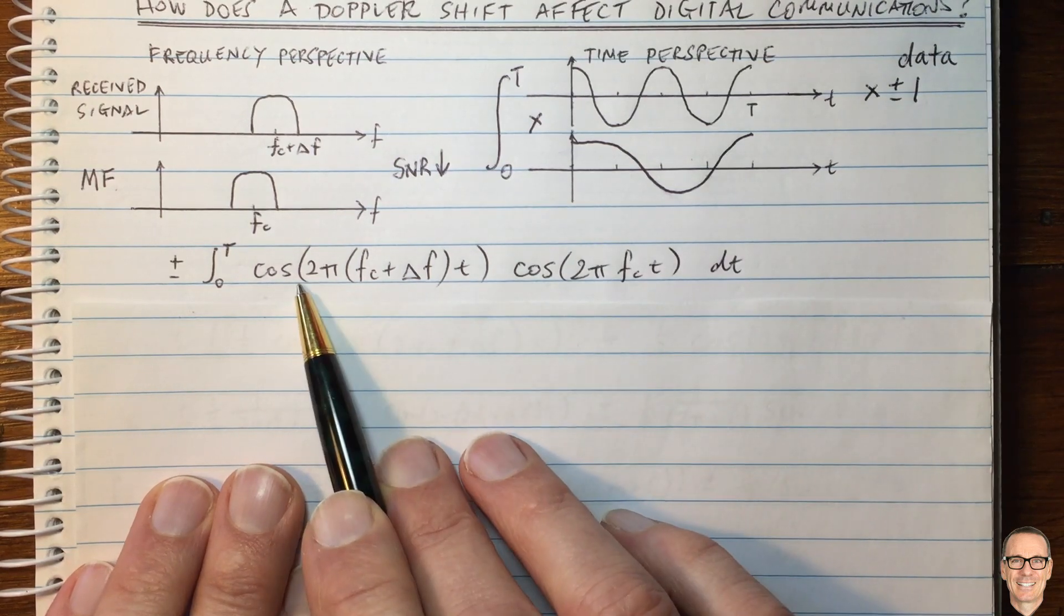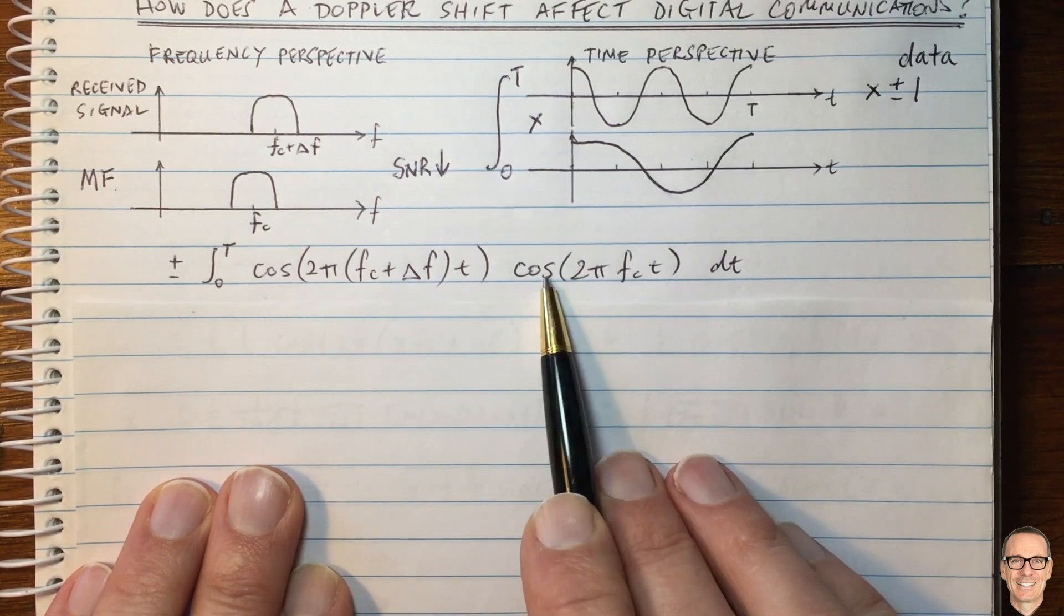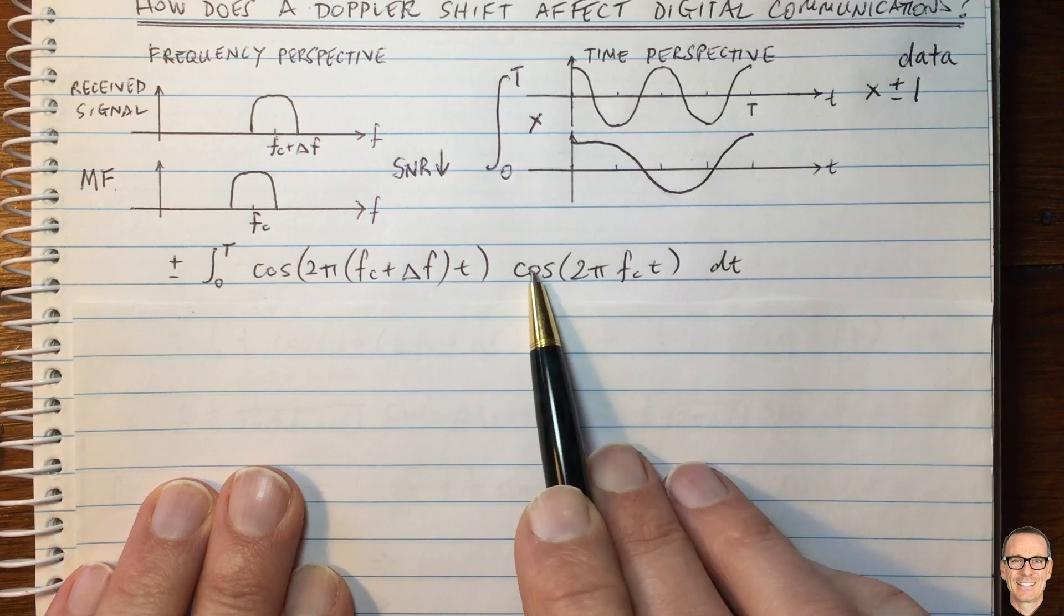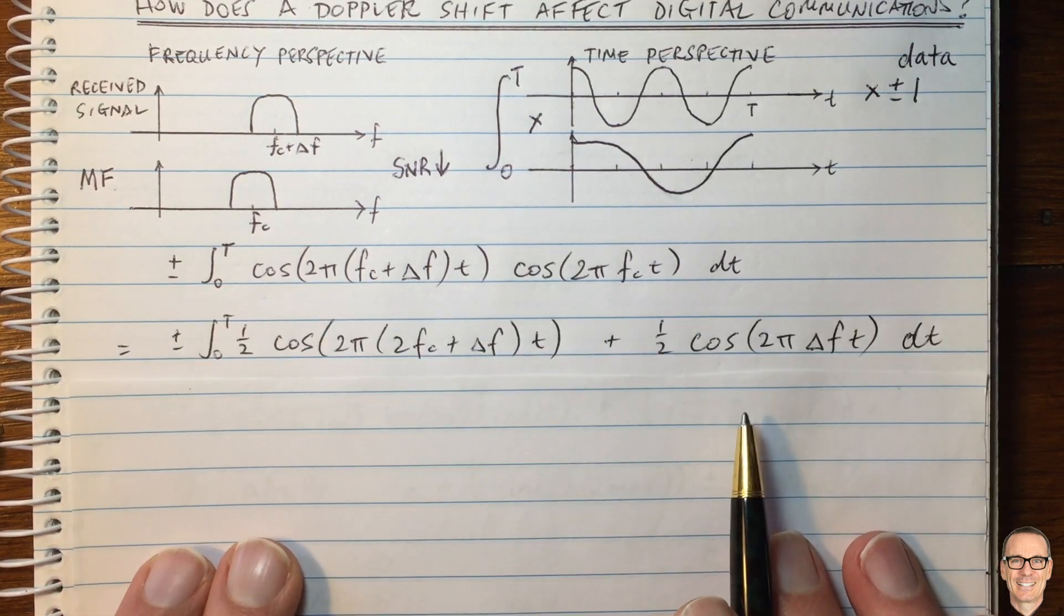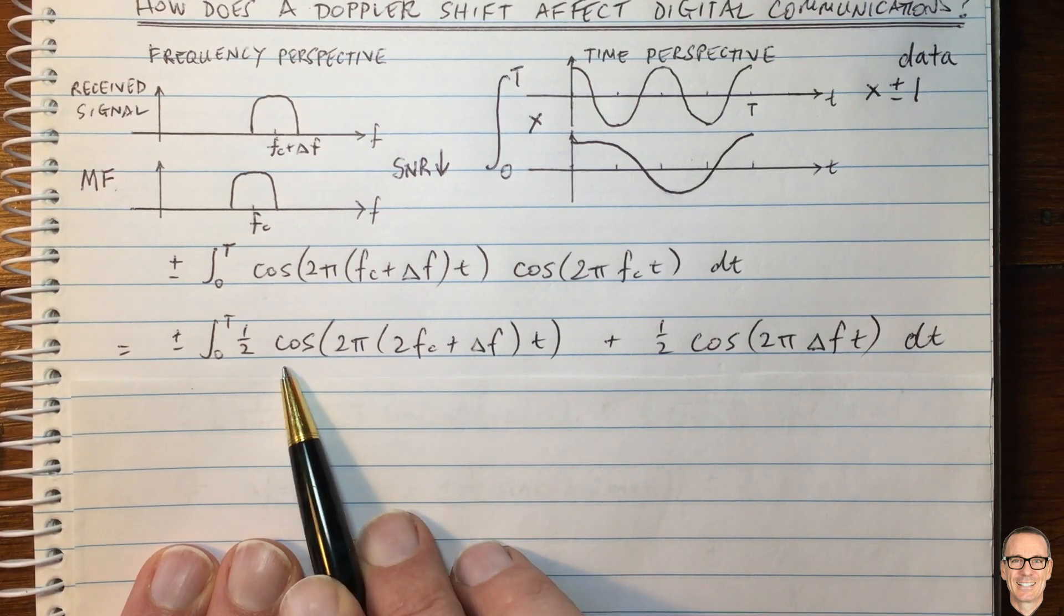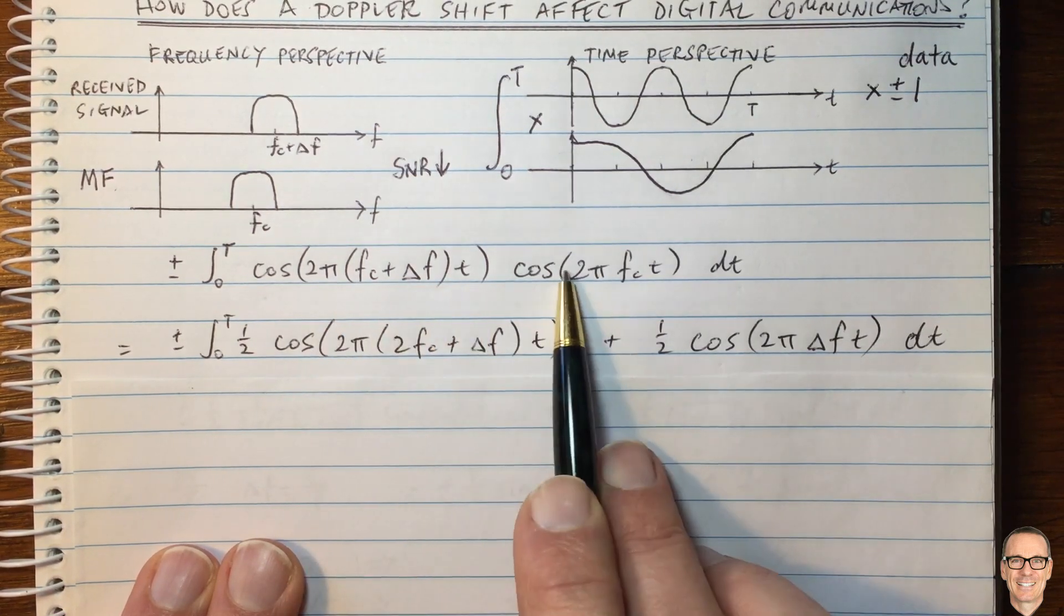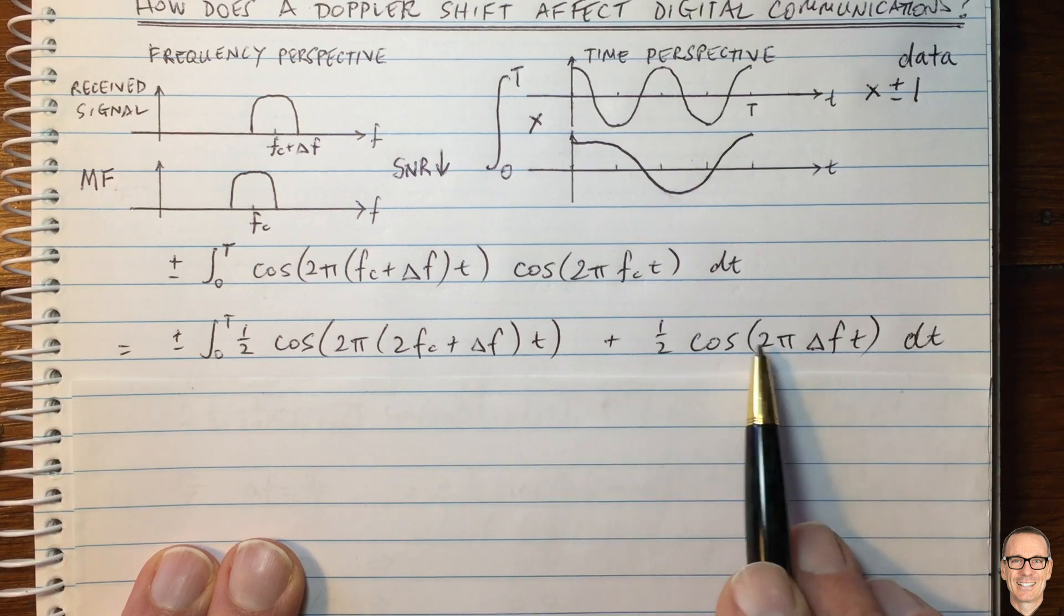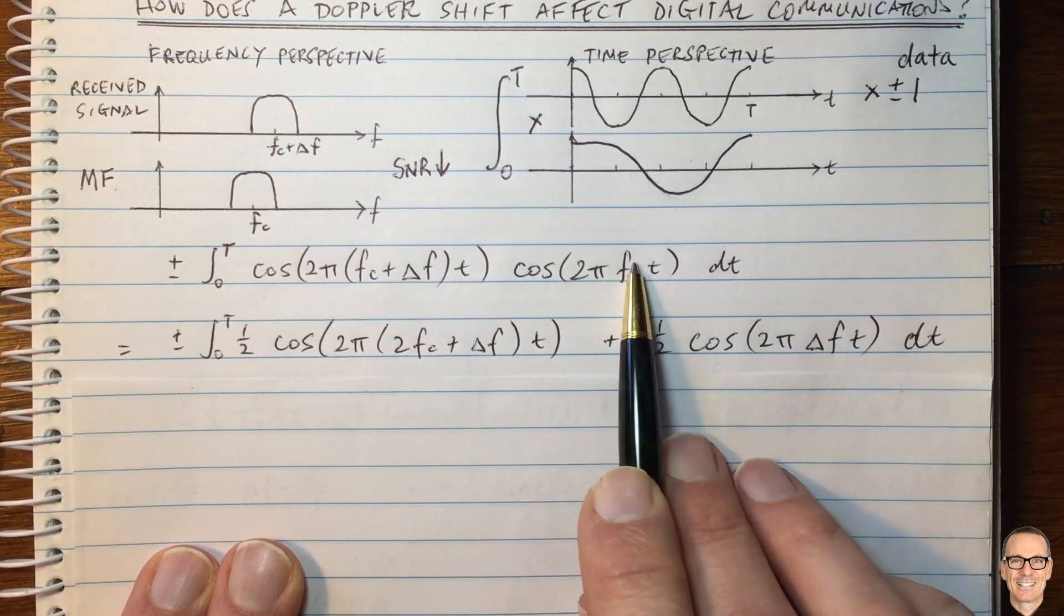So let's rewrite this using a basic trigonometric expression where we can write the product of two cosines in terms of the summation of two cosines. And so this is what I've done here, and we'll see that this is the cos of the addition of those two terms there, and this is the cos of the difference of those two terms.